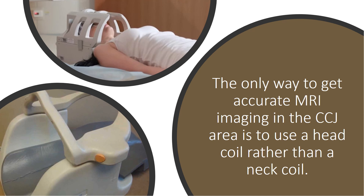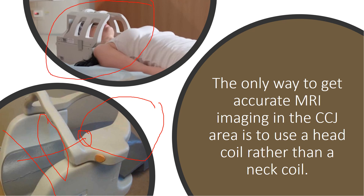The only way to get accurate MRI information about the CCJ is to use a head coil. We have two kinds of coils shown here. A coil is the thing that gets information about the body for the MRI. Your head would go up here, your neck goes through this neck coil, then your shoulders are down there — so it's gathering information about your neck, and not as much about this area, which is above the coil. This head coil goes around the head and the upper neck, so it's going to gather more information.